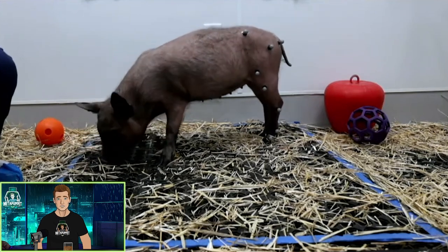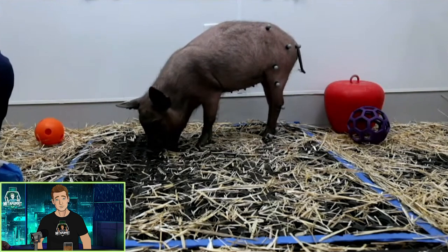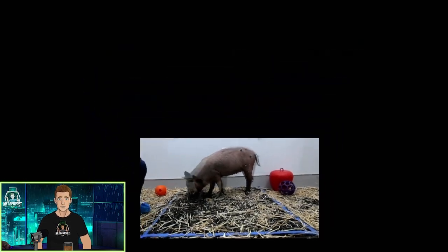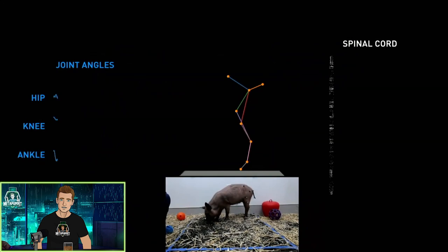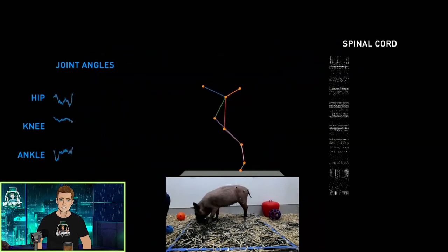Here's a pig. The pig has two Neuralink implants, one in the brain and one in the spinal cord. The little balls on its legs are motion capture devices. You can see the stream of neural activity being recorded in real time. This data can be used to decode